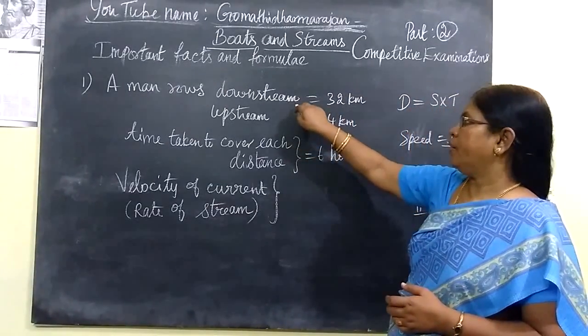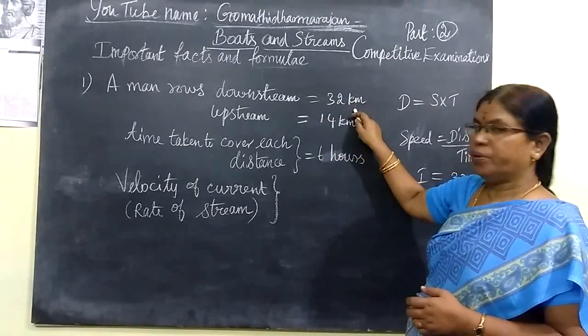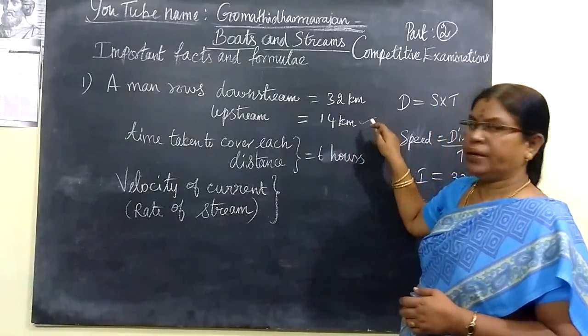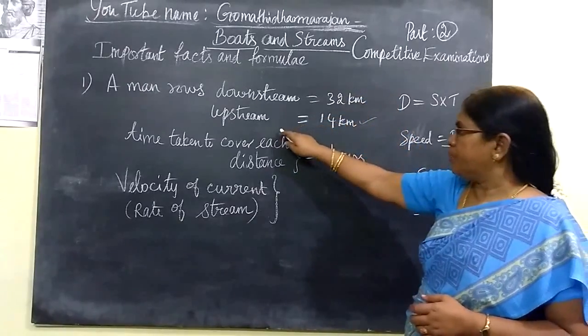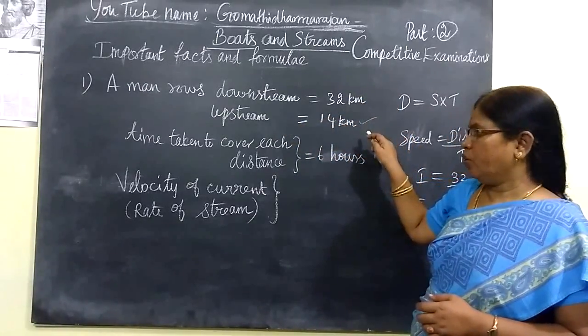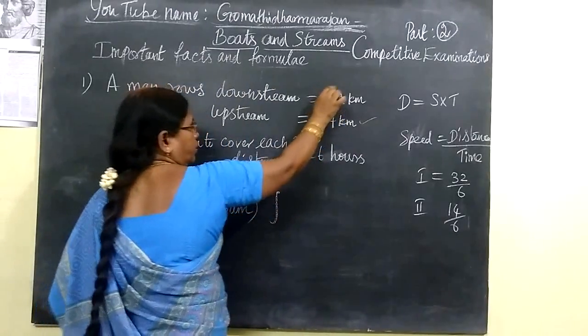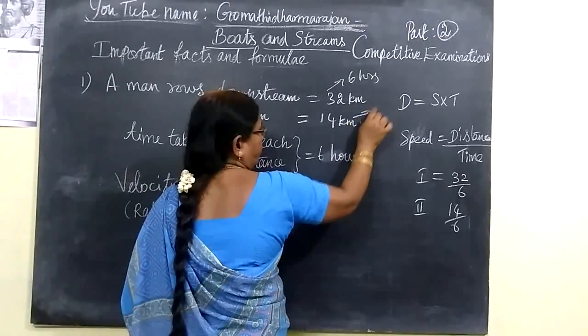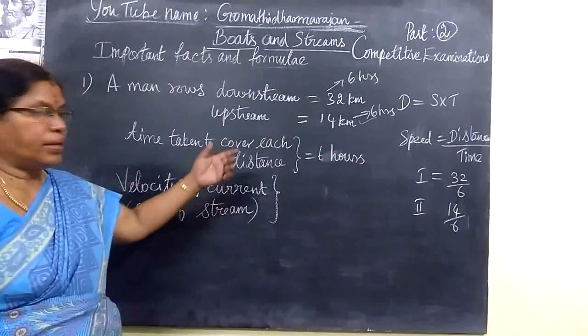A man rowed downstream 32 km and upstream 14 km he covered. So downstream he covered 32 km, upstream he covered 14 km. Time taken to cover each distance, he had taken 6 hours.